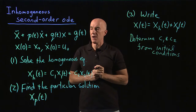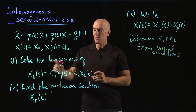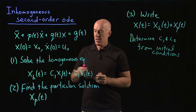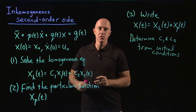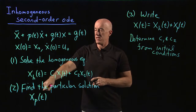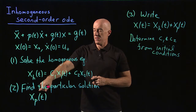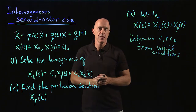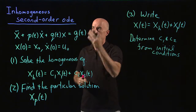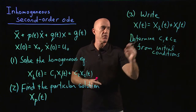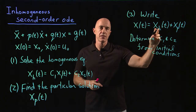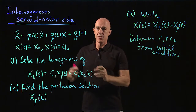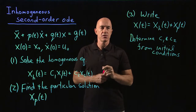So that's the three-step process: solve the homogeneous equation and find its general solution; find the particular solution x sub p of t — the x that when you substitute it into the left-hand side, you get g of t; then write the general solution of the inhomogeneous differential equation as the sum of the homogeneous solution and the particular solution; and finally, determine c1 and c2 from the initial conditions.